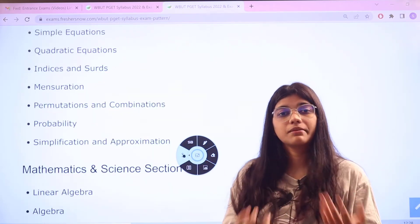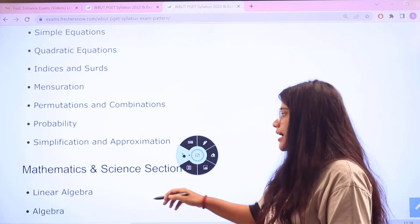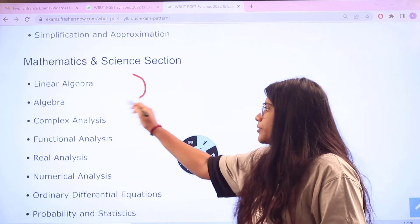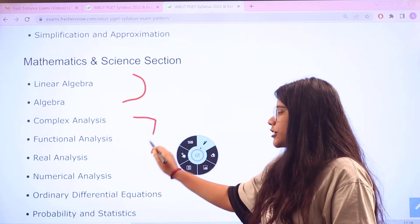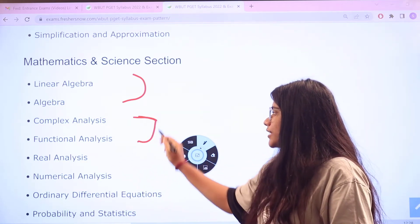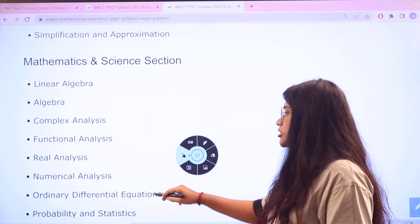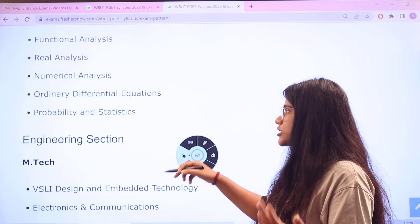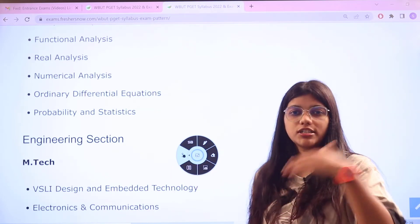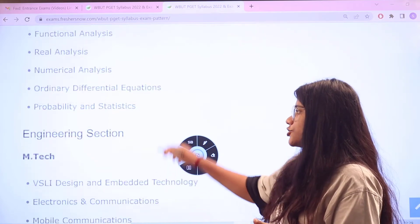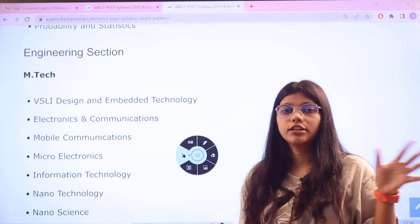Next, you have mathematics and science sections. Starting off with algebra, complex analysis and functional analysis, all of the analysis sections which are complex, functional, and real, also numerical analysis. Next, ordinary differentiation equations. Next, you have probability section, probabilities and statistics here.